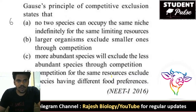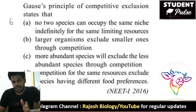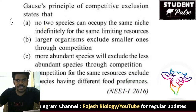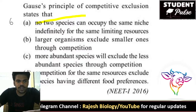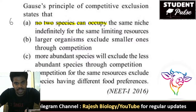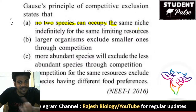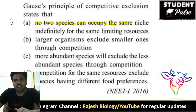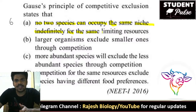According to Gause's principle of competitive exclusion, no two species can occupy the same niche indefinitely for the same limiting resources. Gause explains that species which compete for the same niche — same feeding grounds and feeding habits — cannot stay indefinitely. They cannot share the resources. That is Gause's principle.